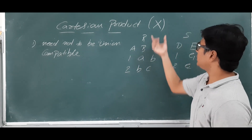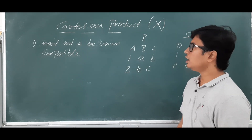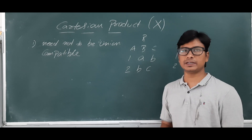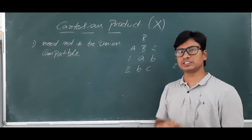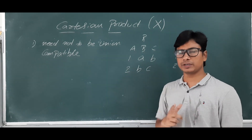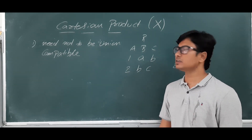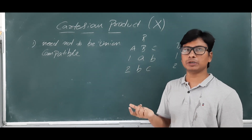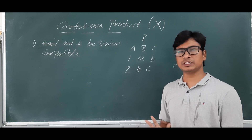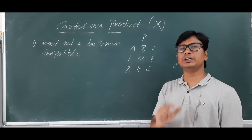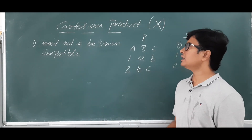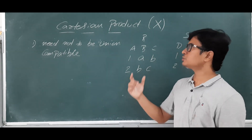Remember, in the last video we discussed set operators like union, intersection, and set difference. To apply those operators, the two relations must be union compatible, meaning the number of attributes must be the same, and the domains of the corresponding attributes must also be the same.